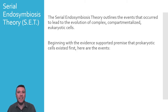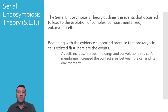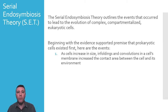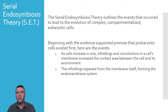The 'serial' in SET tells us that the events involved in the formation of eukaryotic cells occurred in a specific sequence. The sequence begins with the premise that prokaryotic life would have existed first. As early prokaryotic cells expanded in size, taking advantage of more and more raw materials from their environment, infoldings of the membrane would have pinched off and become separated from the cell membrane itself. That would give rise to the endomembrane system, forming the nucleus and other associated organelles.